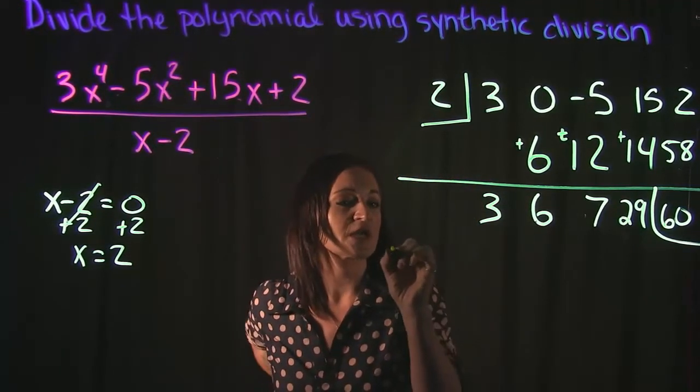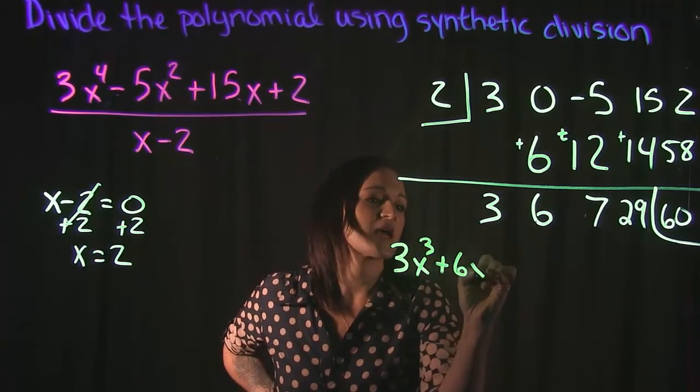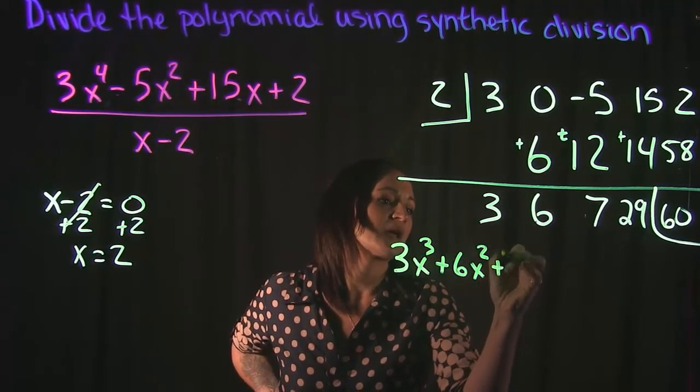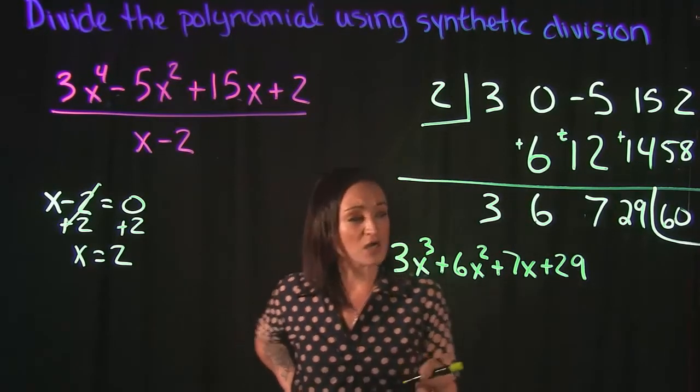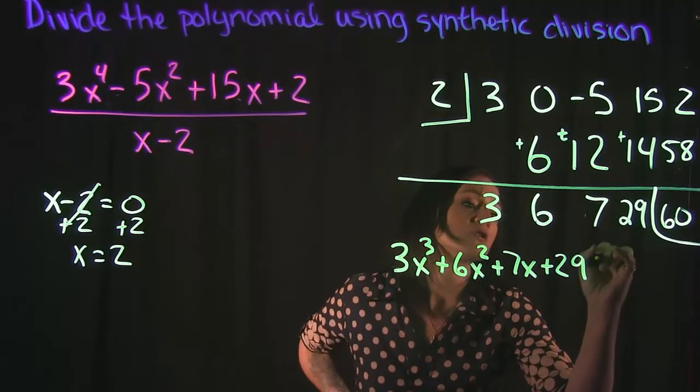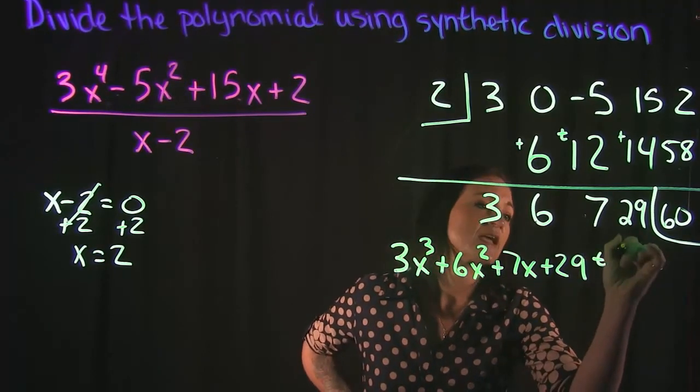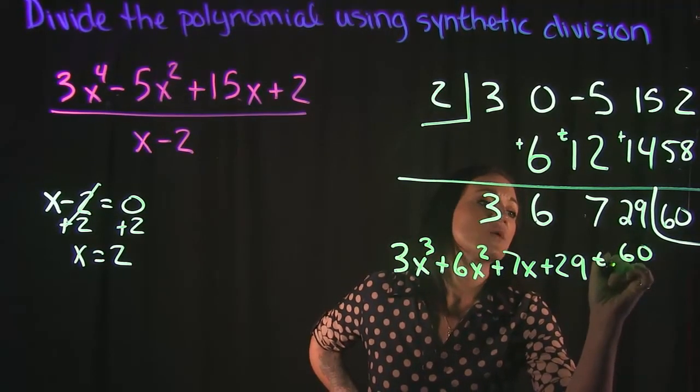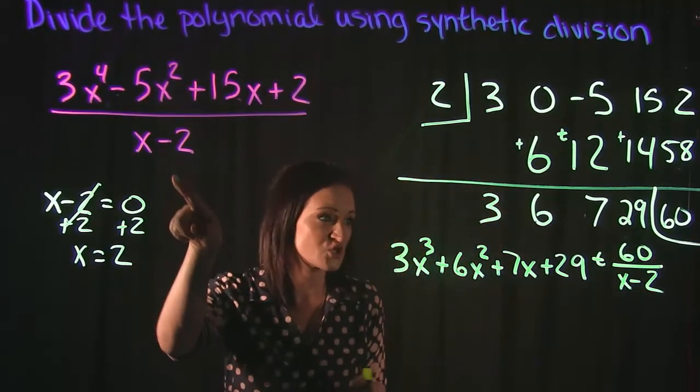So the way that that's going to look, it's going to look like 3x cubed plus 6x squared plus 7x plus 29. And then we need to also add our remainder to it. So when you write your remainder, you're just tacking it onto the end and you're adding it. So we're going to add 60 and then we put that over our divisor of x minus 2.